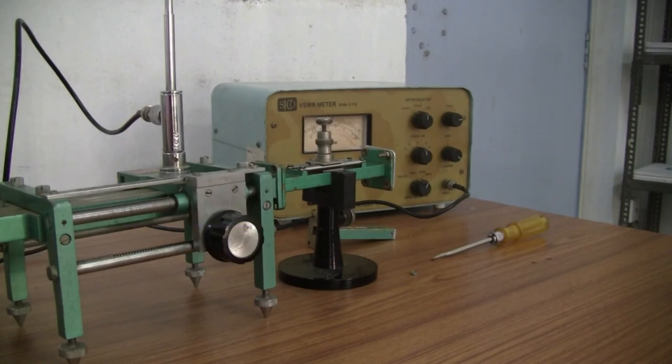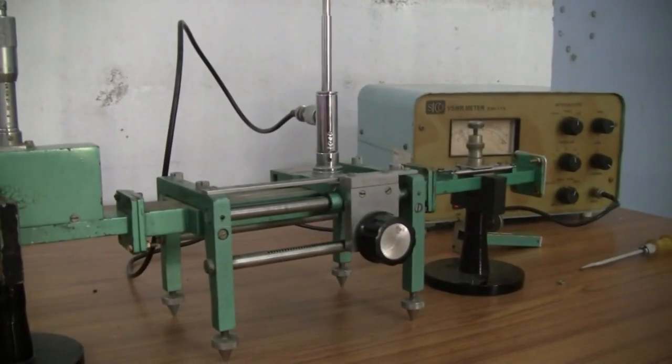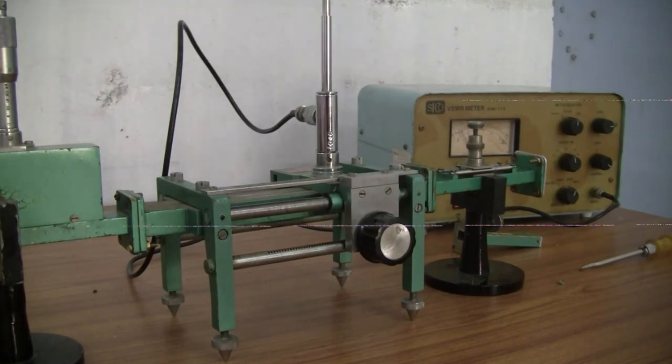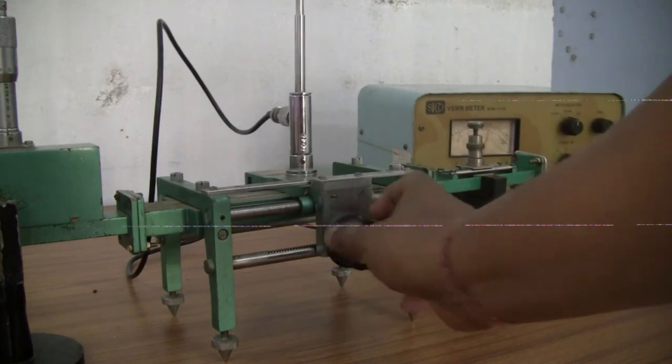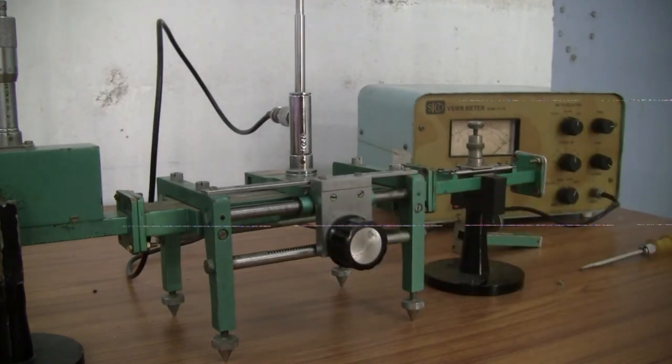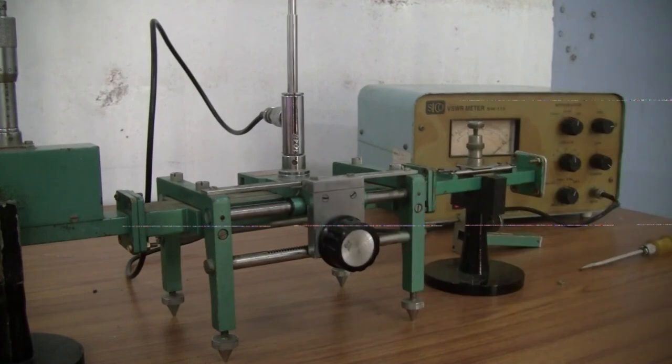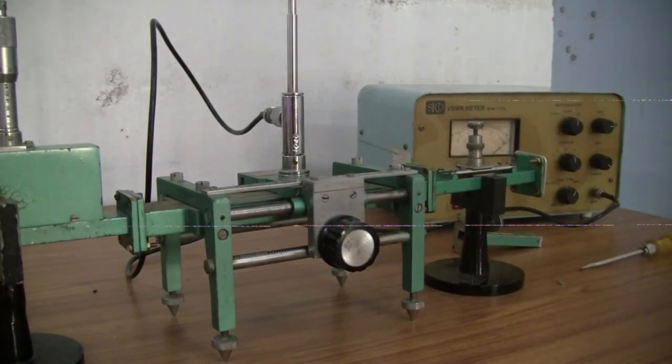Keep the slotted line in extreme right position and start moving slowly towards left until the minimum power point is achieved. At the minimum power point, take the value of position DS1 and continue moving towards left to get the next minimum position DS2.